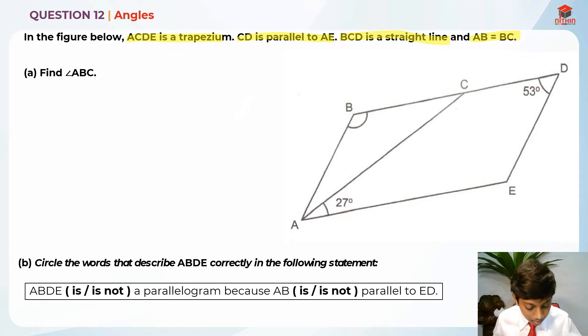They're telling us that ACDE is a trapezium, and CD is parallel to AE. CD is parallel to AE because a trapezium has only one set of parallel lines. BCD is a straight line. So they're suddenly telling us that BCD is a straight line.